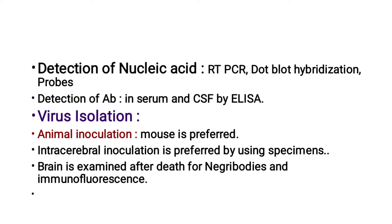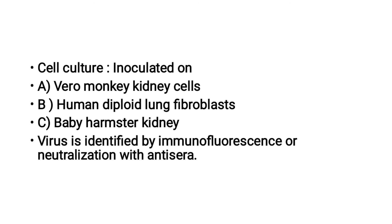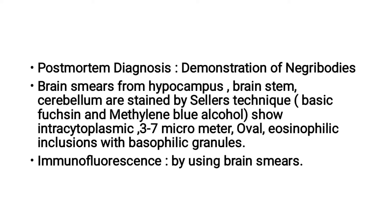For isolation of the virus, the first method is animal inoculation — the mouse is preferred. Virus inoculation is by the intracerebral route using specimens. After death, the brain is examined for Negri bodies using the immunofluorescence technique. For cell culture, Vero monkey kidney cells, human diploid lung fibroblastic cells, and baby hamster kidney cells are used. The virus is identified by immunofluorescence or neutralization with antiserum.